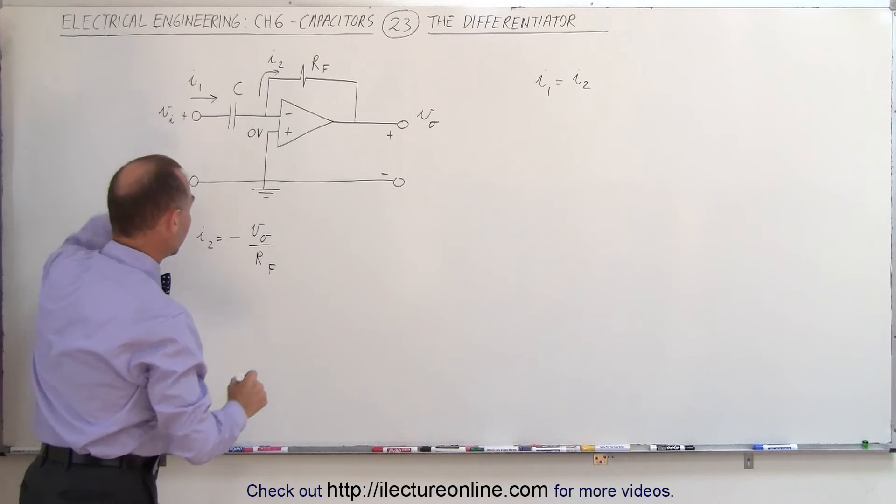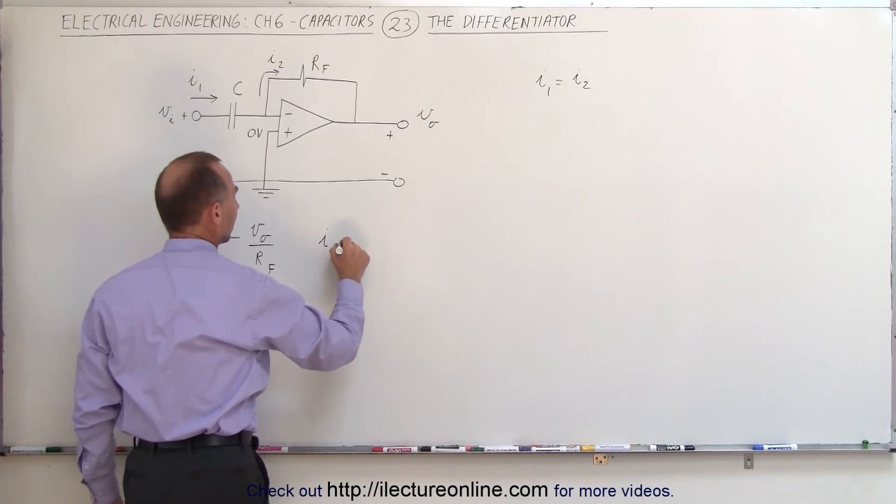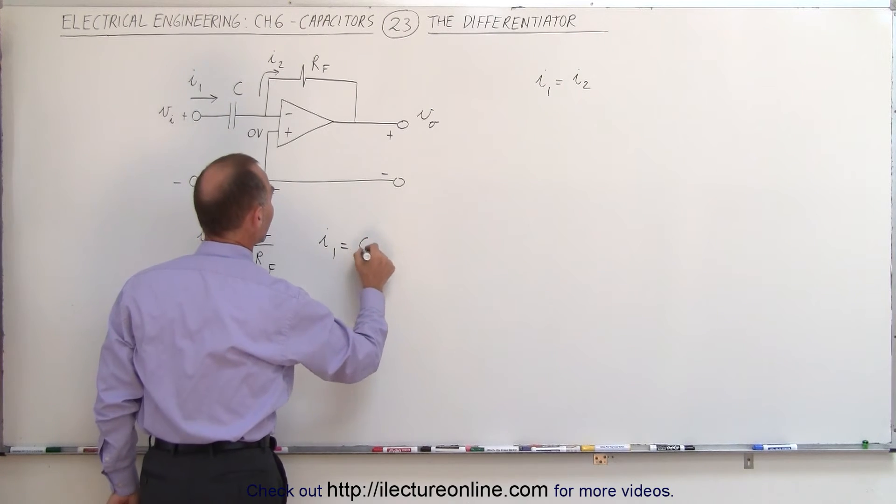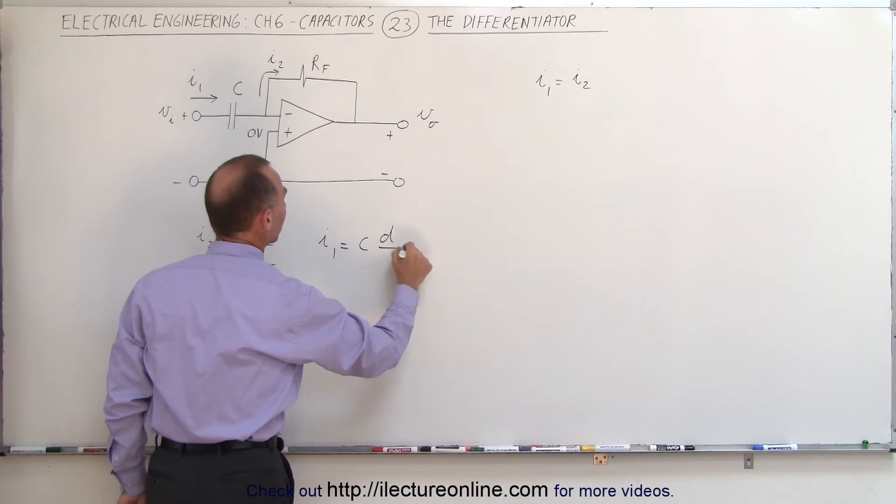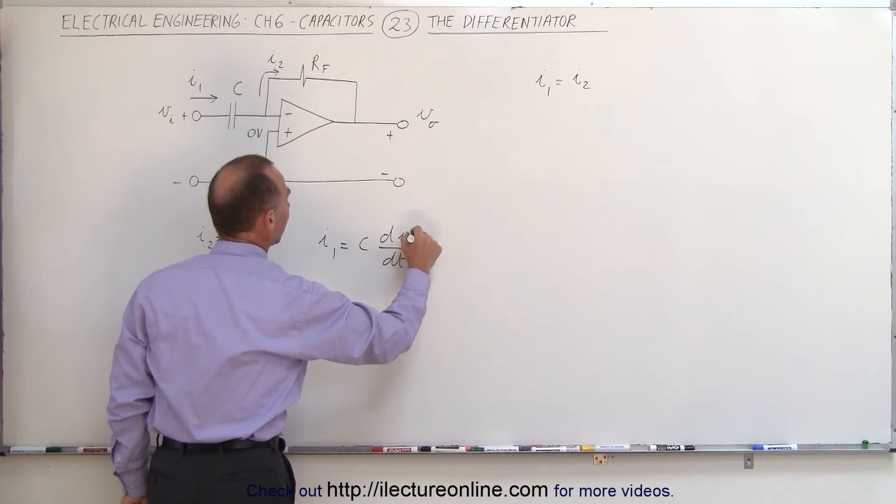On the input current, we can say that I1 is equal to the capacitance times the rate of change with respect to the time of the input voltage.